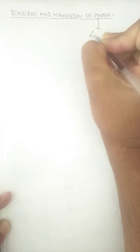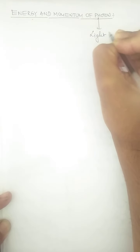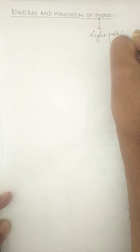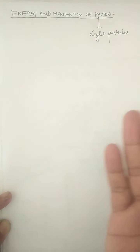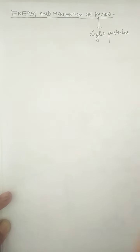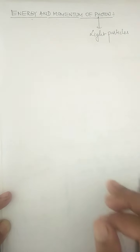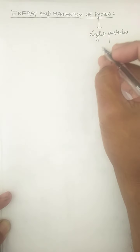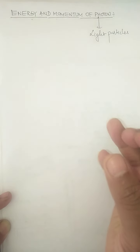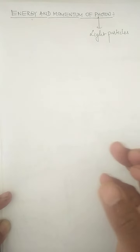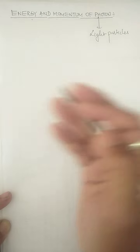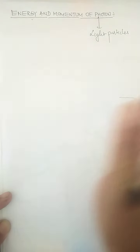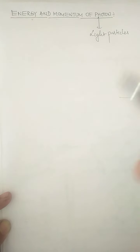Photons are light particles. If this particle has a mass, then it has a momentum, because photons are such particles which are always moving with a certain speed — photons can never remain at rest. Remember this: photon is a light particle which can never remain at rest. Every particle, however small, has a mass. So if a photon has a mass and it always travels with the speed of light, then it has momentum — because momentum is mass in motion.